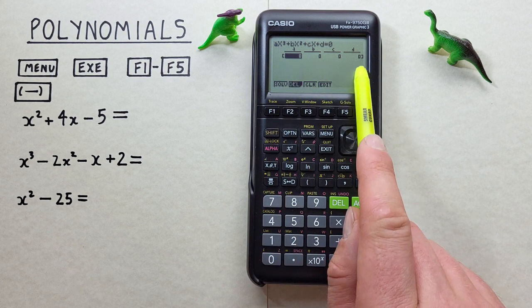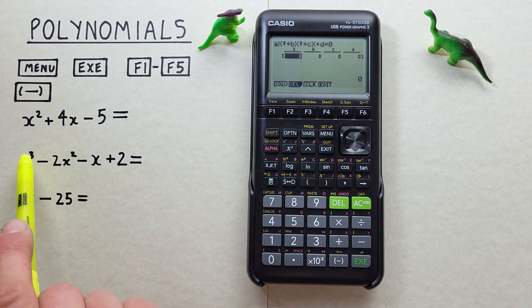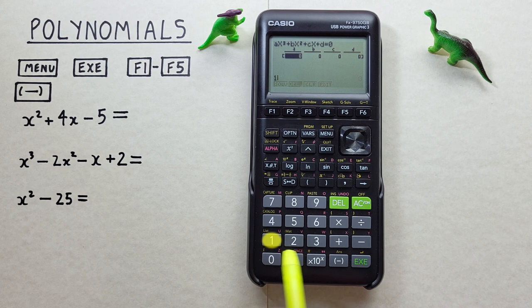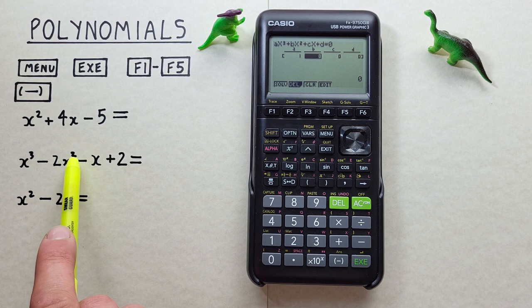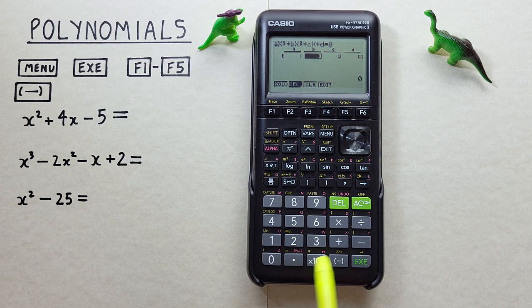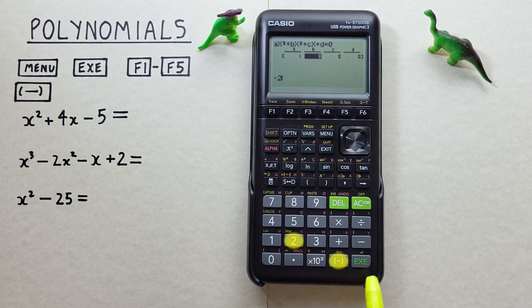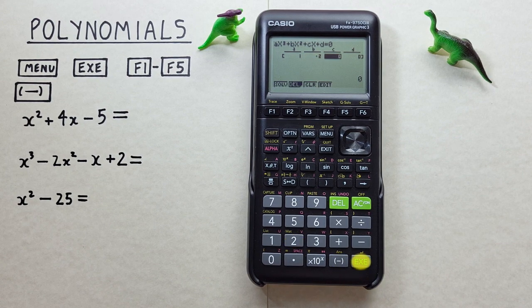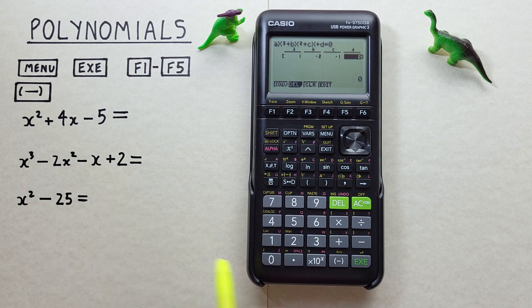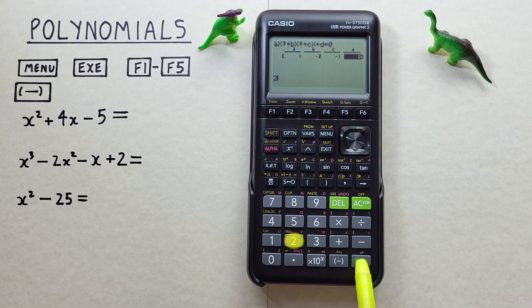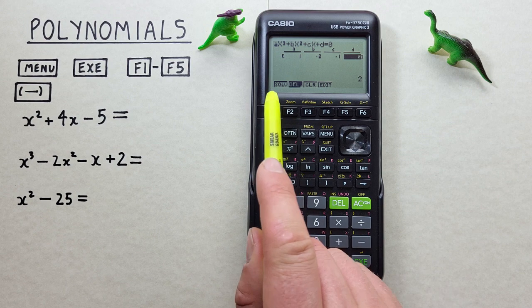We can again fill in our blanks. So X to the power of 3, we have 1 there, minus 2X squared. So we have a negative 2 there, minus X. So we'll go negative 1, plus 2. So we go 2 there and hit EXE, or we can hit the F1 for solve.